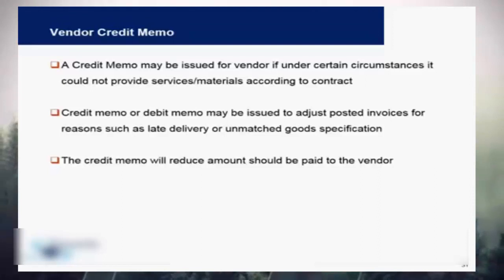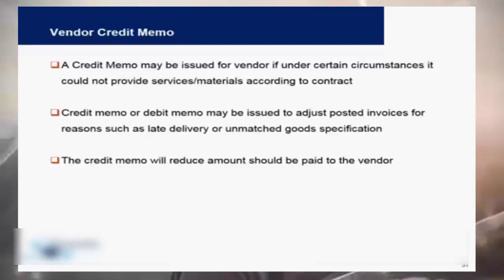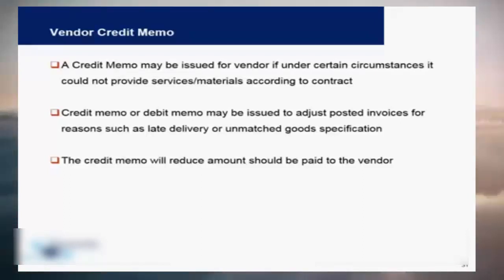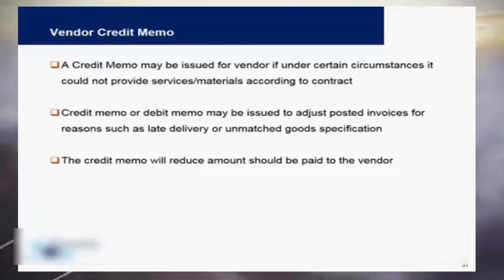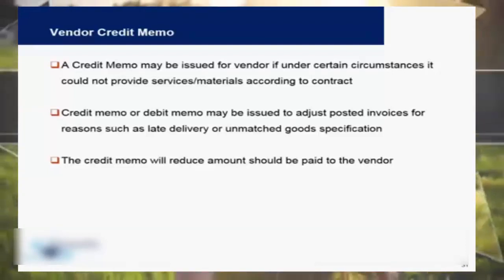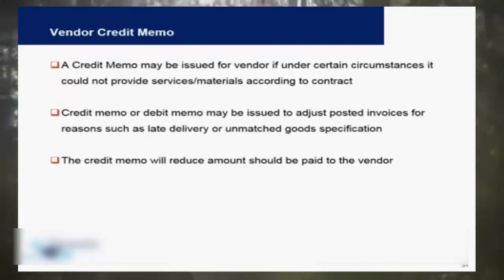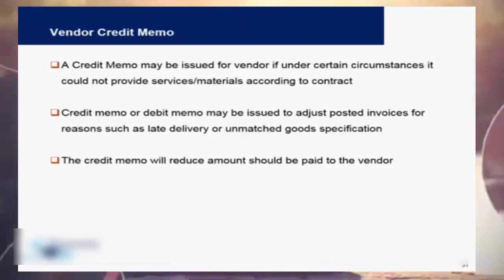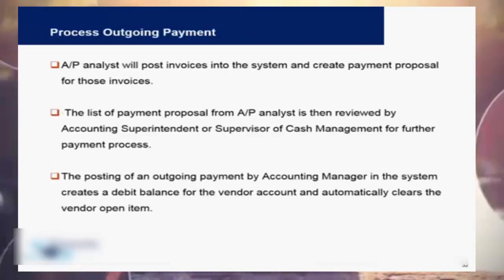A credit memo may be issued if, under certain circumstances, the vendor could not provide those services or materials according to the contract. A credit memo can also be issued to adjust posted invoices for reasons such as late delivery or unmatched goods specification. This credit memo will reduce the amount which you need to pay to the vendor.